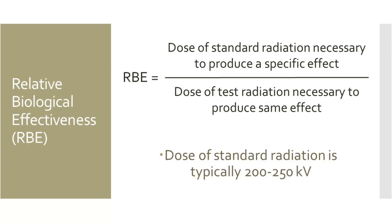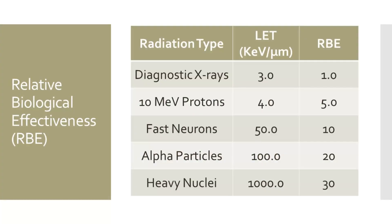An interesting note is that the standard radiation is typically 200–250 kV peak, as this was the value historically used in early research of biological harm. Weighting factors applied to different types of radiation determine the effective dose, which is measured in REM or Sieverts. The RBE is how that weighting factor is determined, and it is based on the LET.